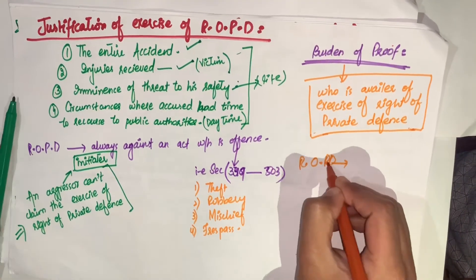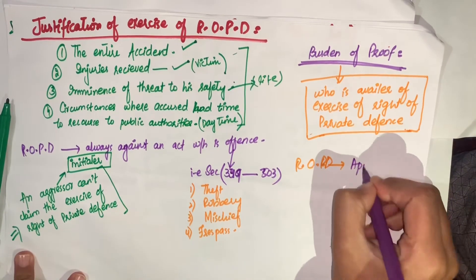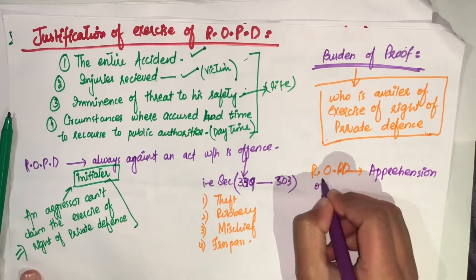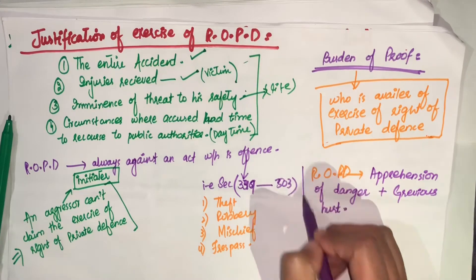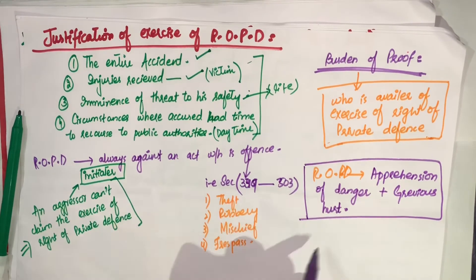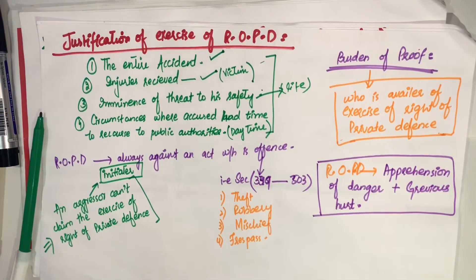So, we can say that the right of private defense is always used when a person has an apprehension of death and grievous hurt against any other person. जहां पर किसी बंदे को apprehension of death या grievous hurt हो किसी दूसरे बंदे की तरफ से. So, this is all about justification of exercise of right of private defense.